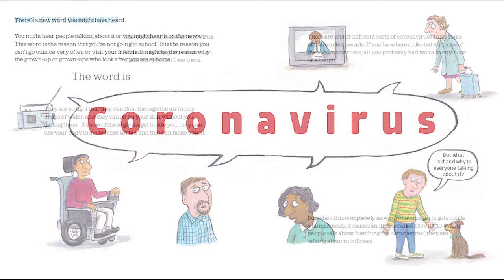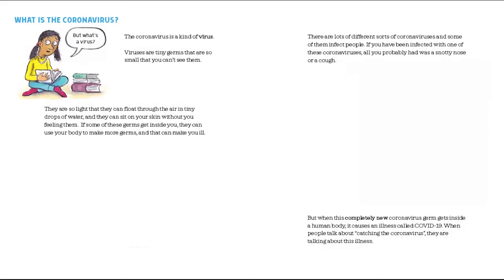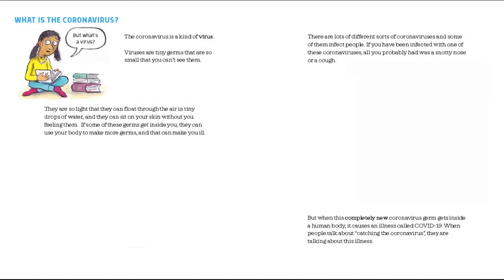What is coronavirus? The coronavirus is a kind of virus. Viruses are tiny germs that are so small you can't see them. They are so light that they can float through the air in tiny drops of water and they can sit on your skin without you feeling them. If some of these germs get inside you they can use your body to make more germs and that can make you ill.